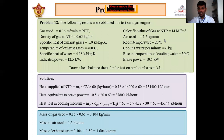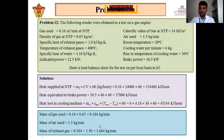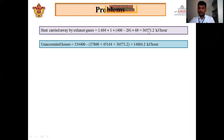Heat carried away by exhaust gas = mass of exhaust gas × Cp × ΔT × 60. Mass = 1.604 kg/min, Cp = 1 kJ/kg·K, ΔT = 400 − 20 = 380°C, multiplied by 60 to convert to per hour. This gives 36,571.2 kJ/hour as the heat carried away by the exhaust gases.